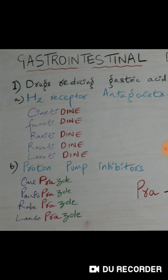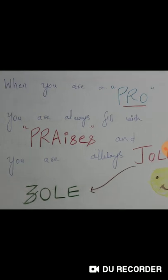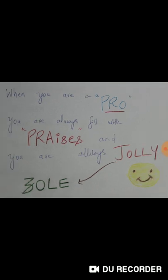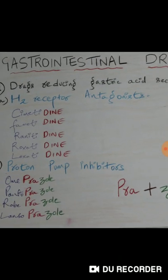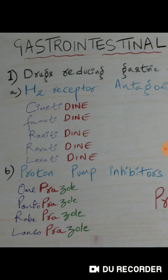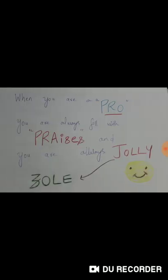Next we have proton pump inhibitors — omeprazole, pantoprazole, rabeprazole, and lansoprazole. The mnemonic: when you are a pro, people always praise you and you feel jolly. Take 'pra' from praises and 'zole' from jolly — that gives you 'prazole.' So proton pump inhibitors all end in 'prazole.'